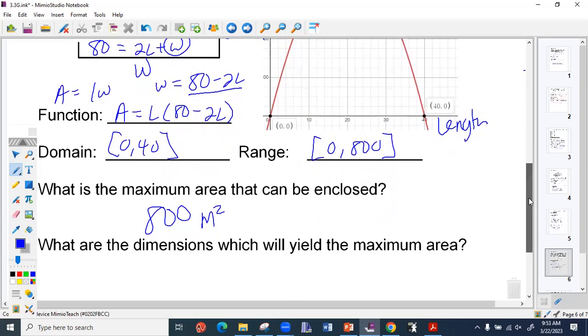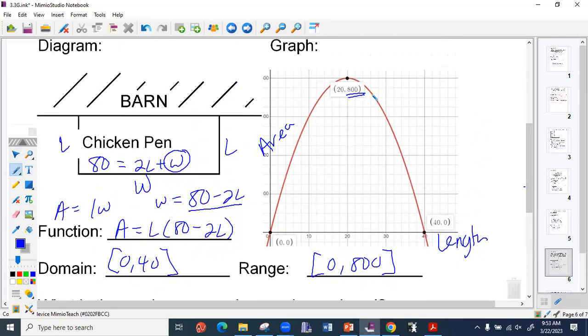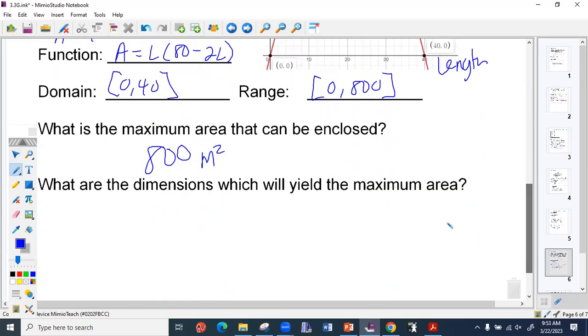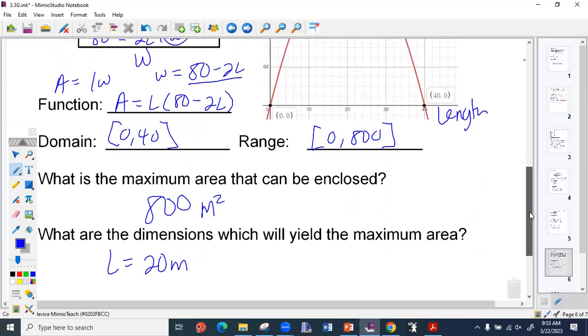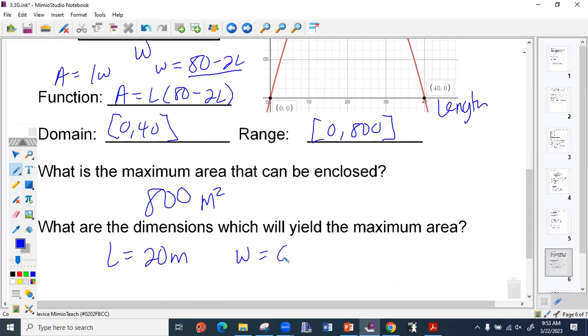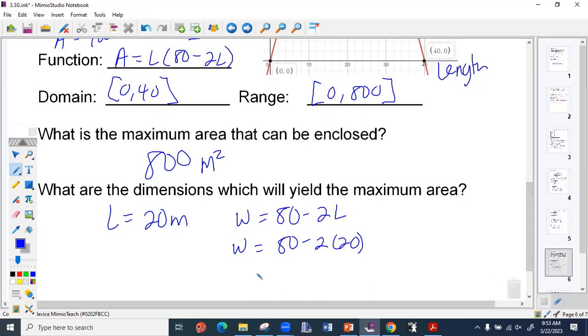Then it asks, what are the dimensions? Well, if I know my length, what was our length that gave us our maximum area? 20. So we know that L equals 20 meters. And what did we say W equal? We said W equal 80 minus 2 times L. So W equals 80 minus 2 times 20, which equals 80 minus 40, which is 40 meters.